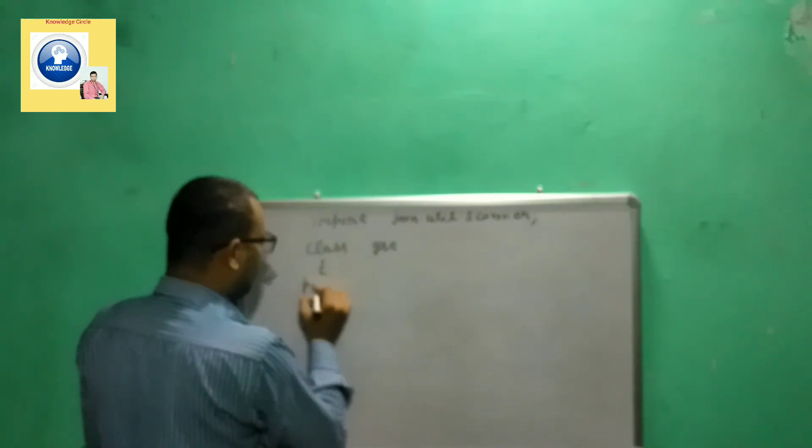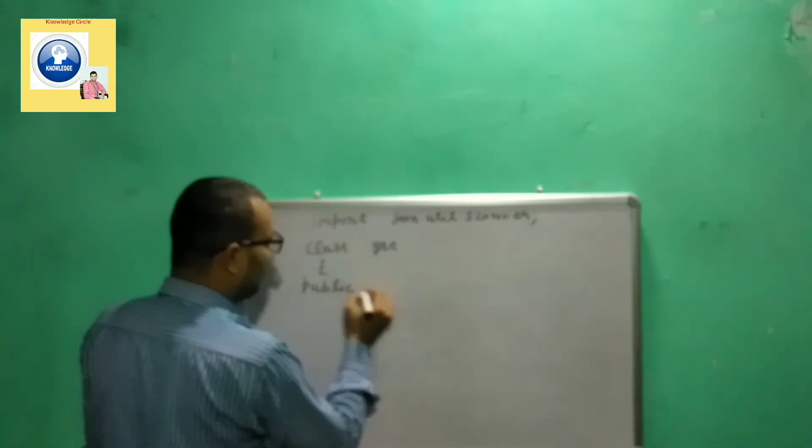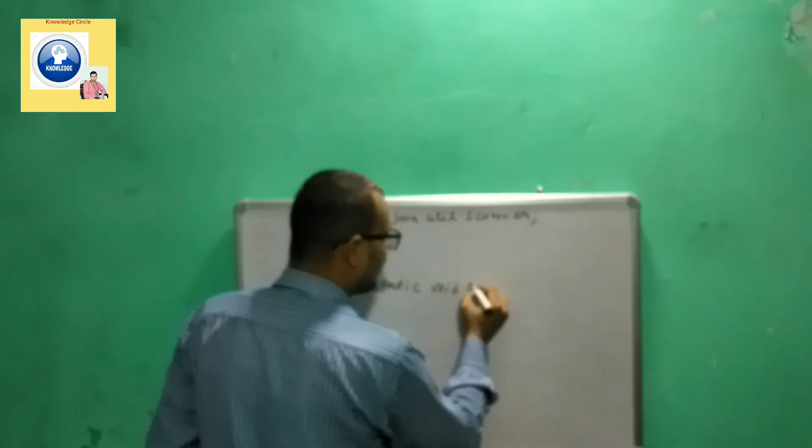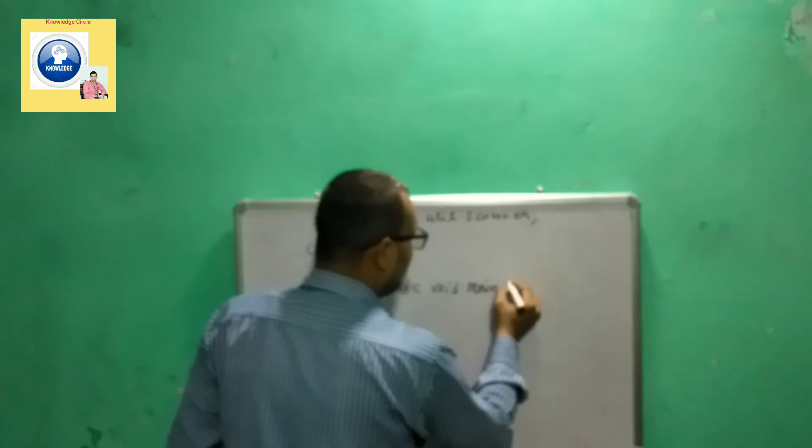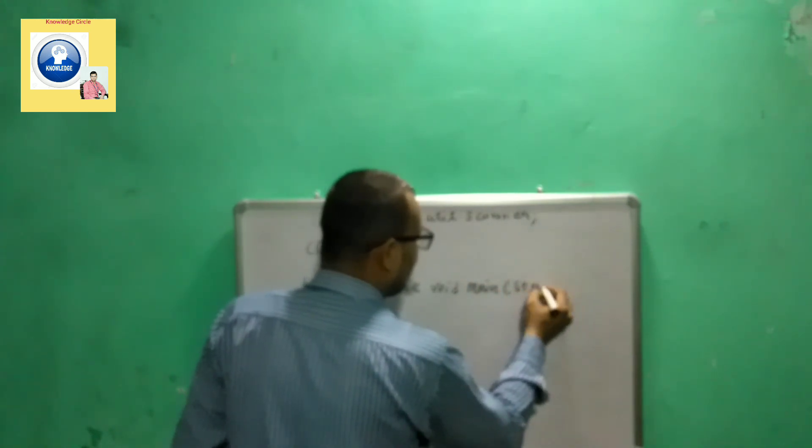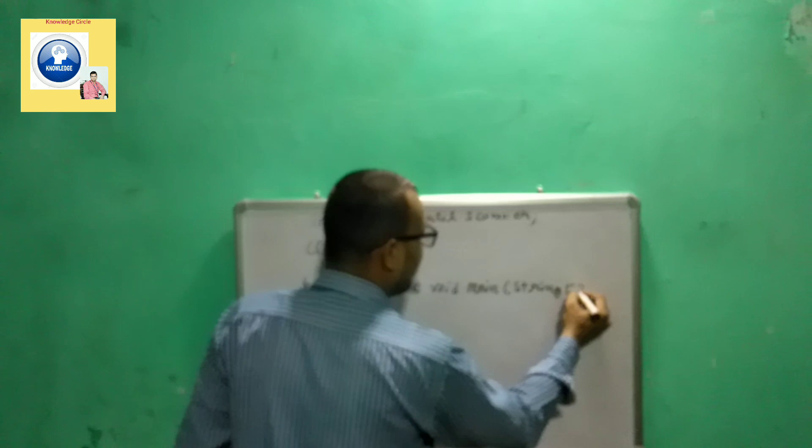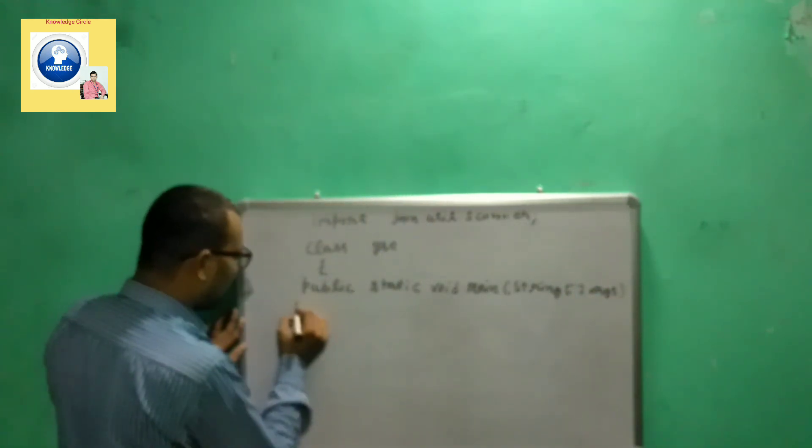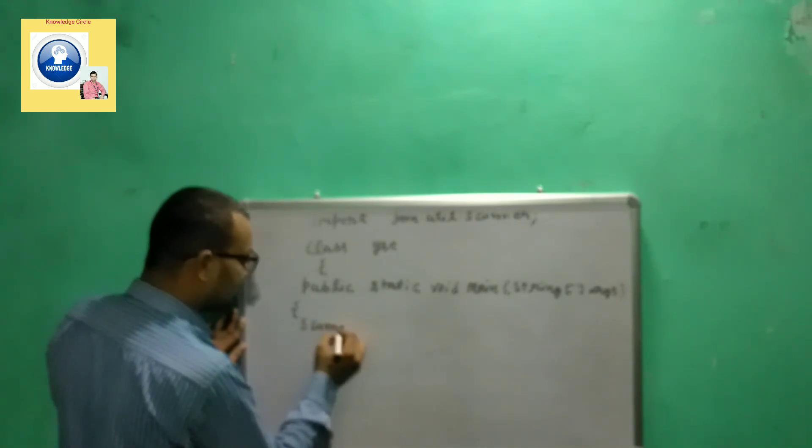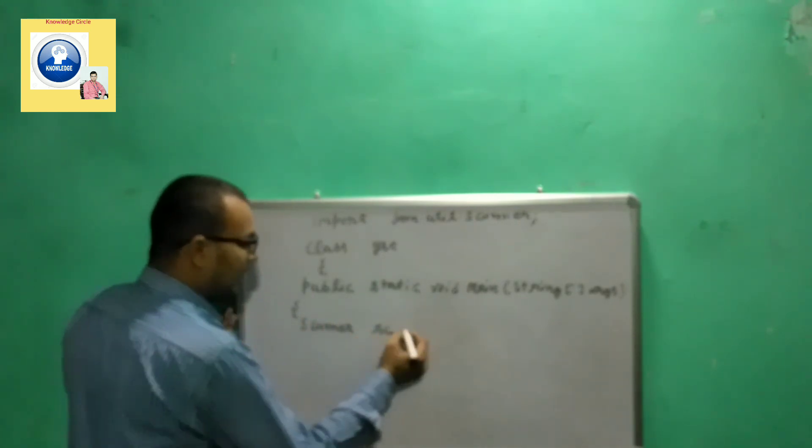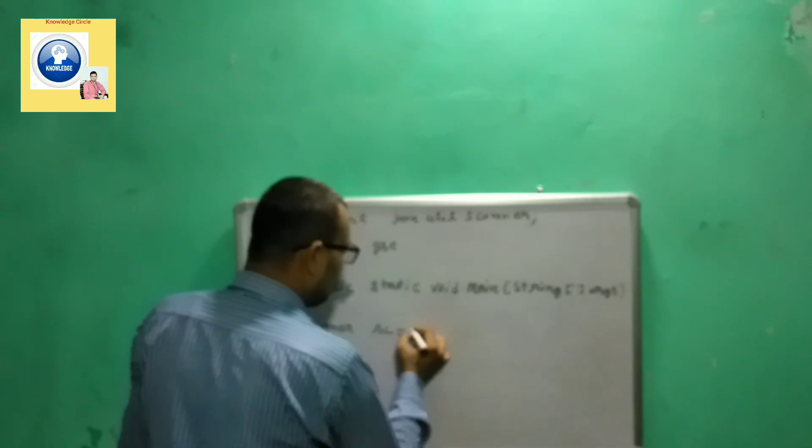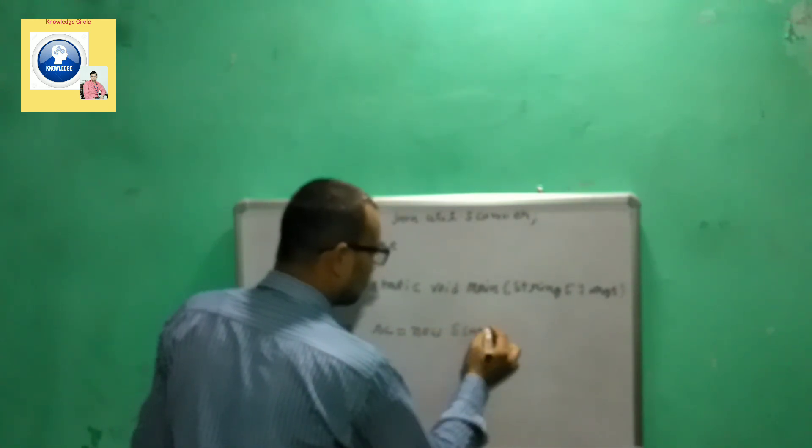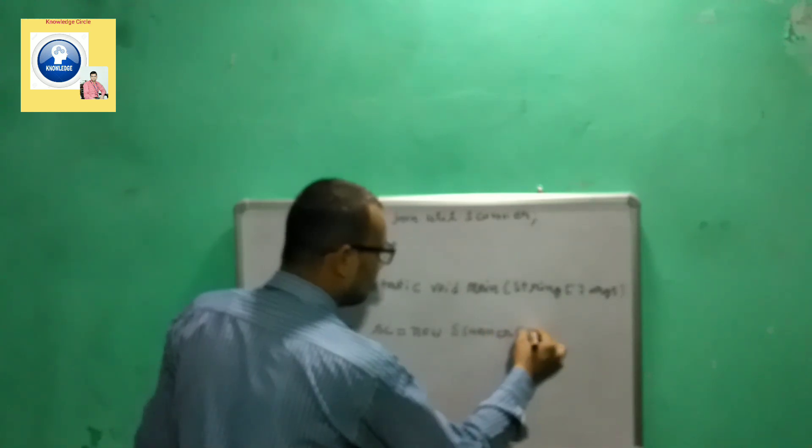Then we have to write public static void main function, then write the arguments required in the main function. Next step, let's create the object of scanner class: scanner sc equal to new scanner system.in.